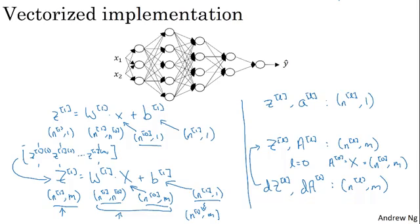When you implement a deep neural network, if you keep straight the dimensions of these various matrices and vectors you're working with, hopefully they'll help you eliminate some class of possible bugs. It certainly helps me get my code right.